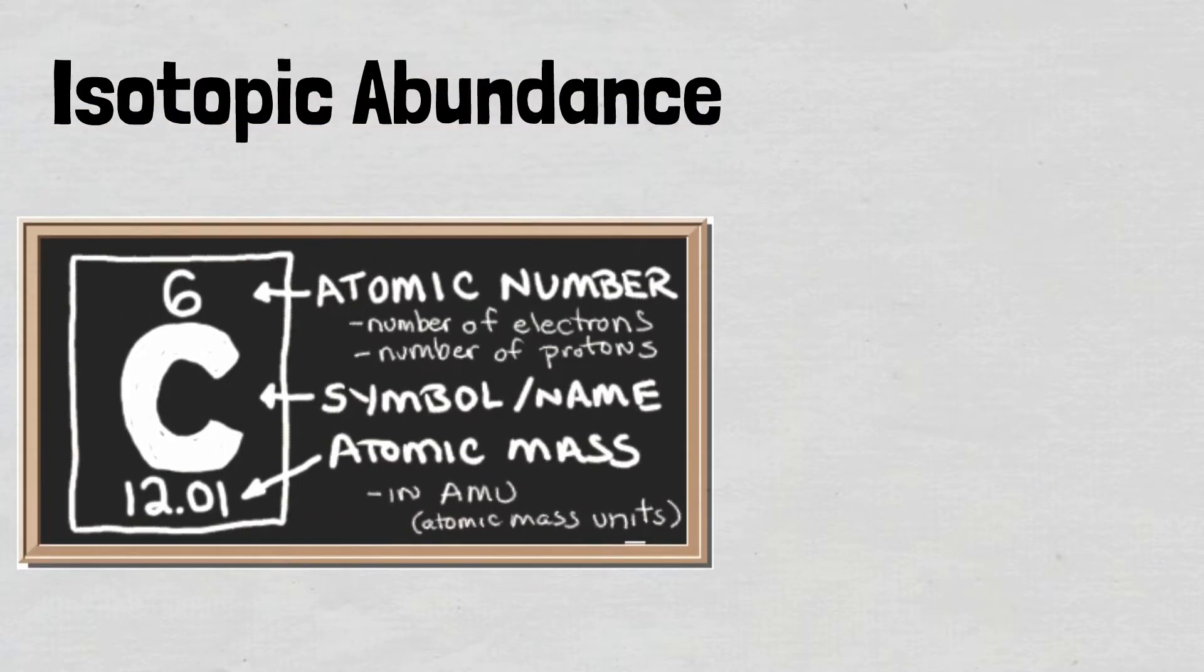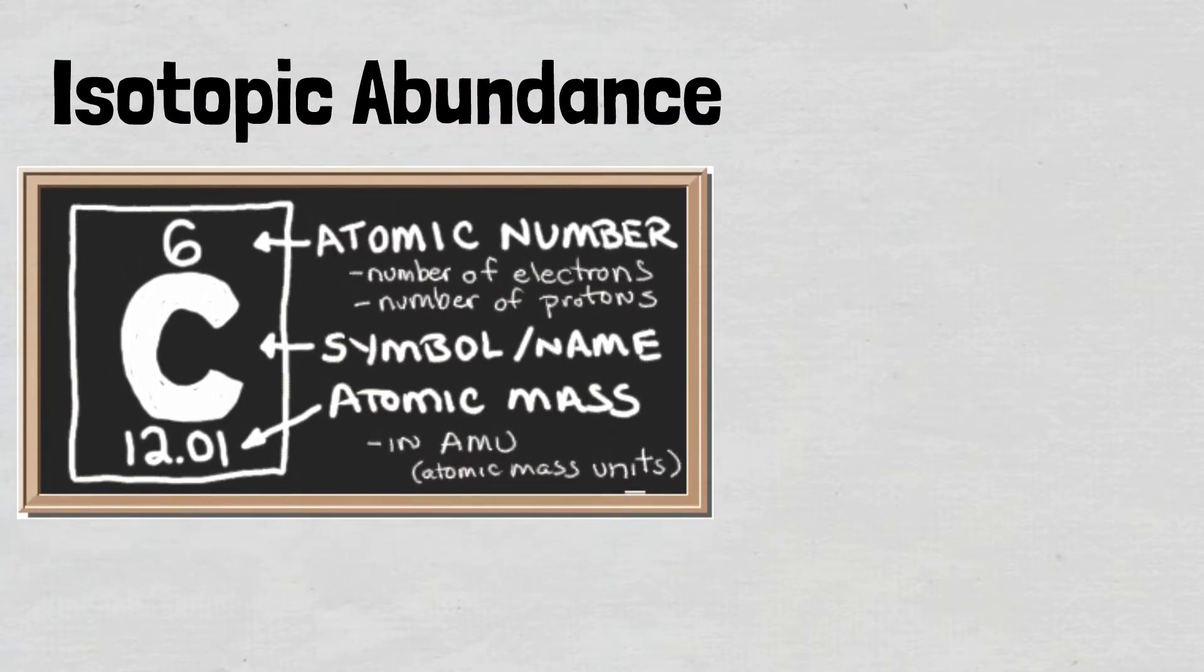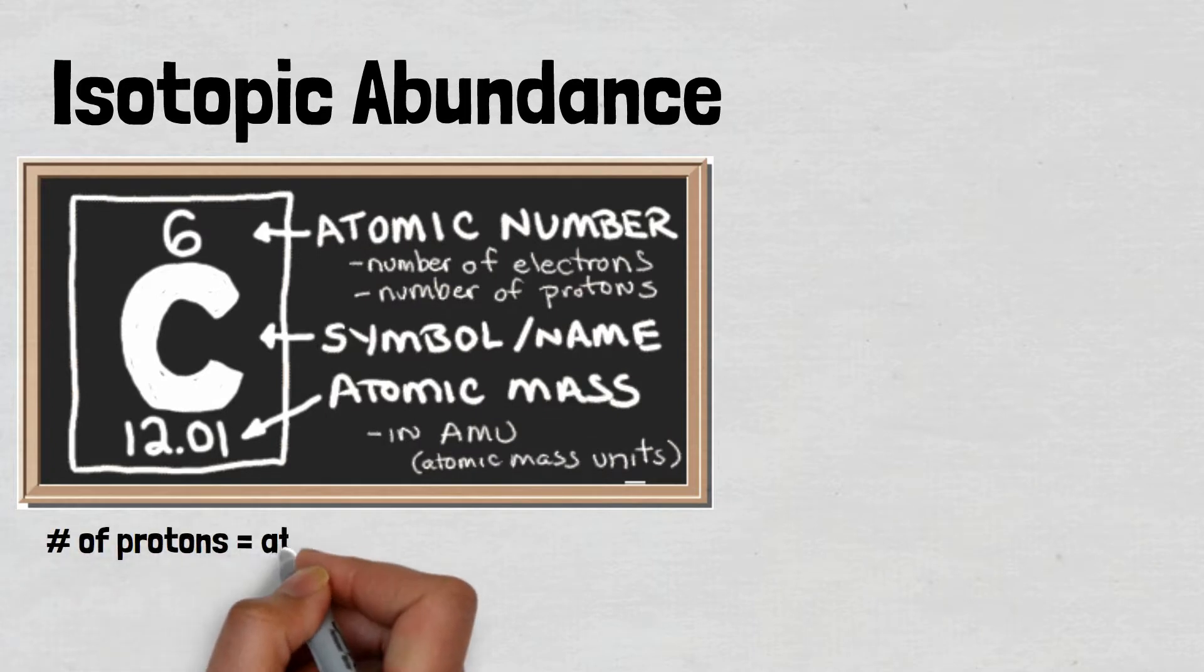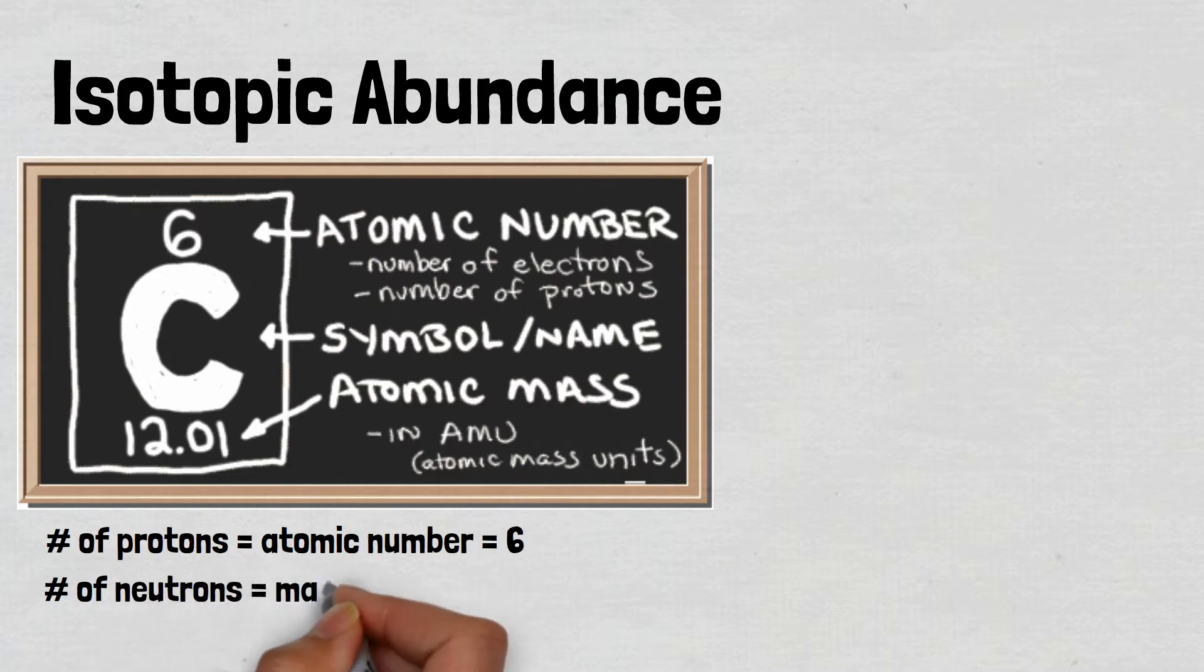Let's take carbon for example. Carbon has an atomic number of 6, which means it has 6 protons in the nucleus. To find the number of neutrons, we are told to round the atomic mass and then subtract it from the atomic number.